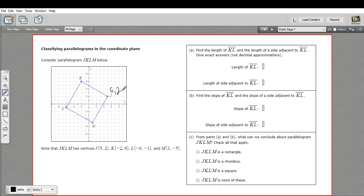So J is (5, 2), K is (-2, 6), L is (-6, -1), and M is (1, -5).